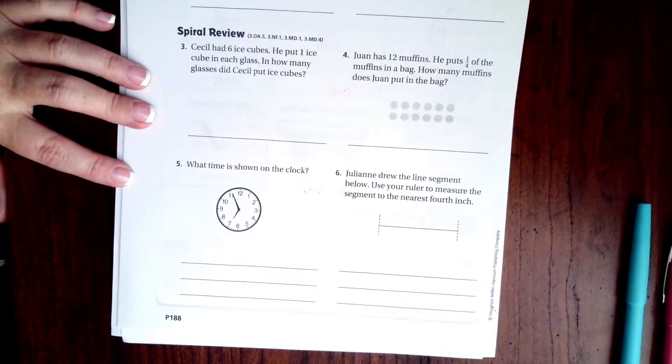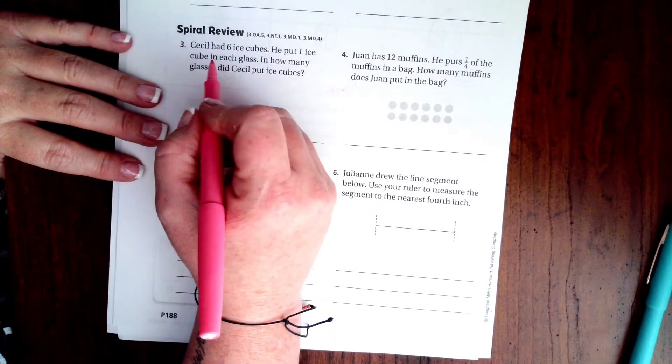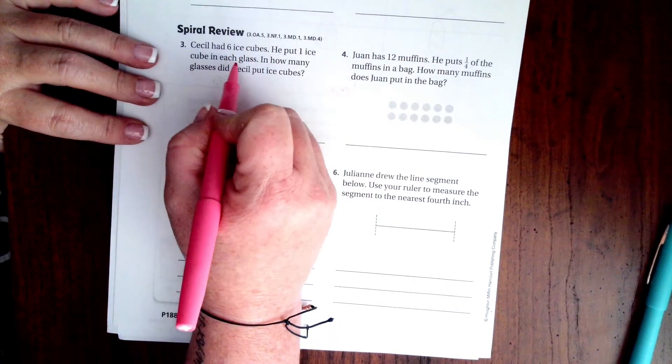We're going to go over onto the back where you guys are going to do the lesson check just like always, and we're going to go down and do the spiral review. It says Cecil had six ice cubes. He put one ice cube in each glass.